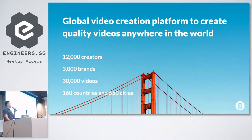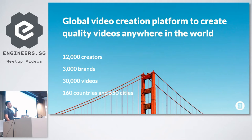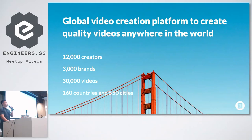To give a quick overview of who Nine Seconds is and what we do: we're a global video creation platform. We work with brands to help them create videos, because video production is a complex thing, and we allow brands to use our platform to simplify the video creation process. We work with about 12,000 creators since our inception in 2010, and over 3,000 brands. We produce about 30,000 videos across 160 countries and 150 cities.